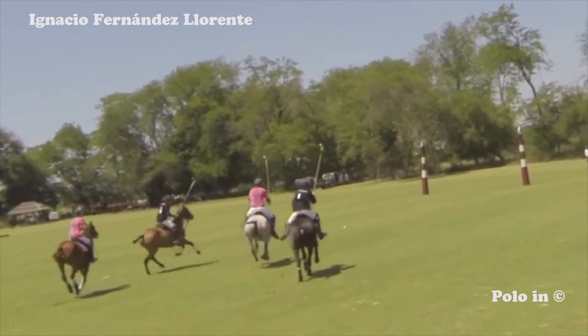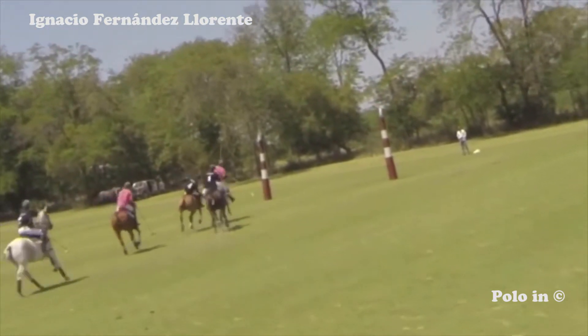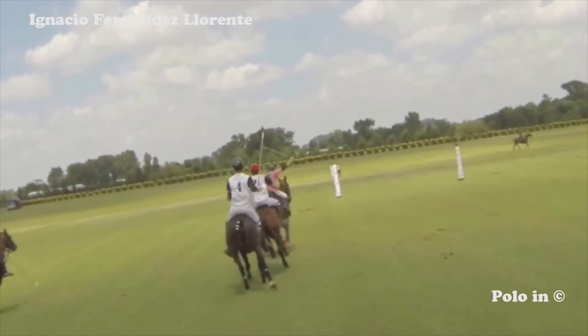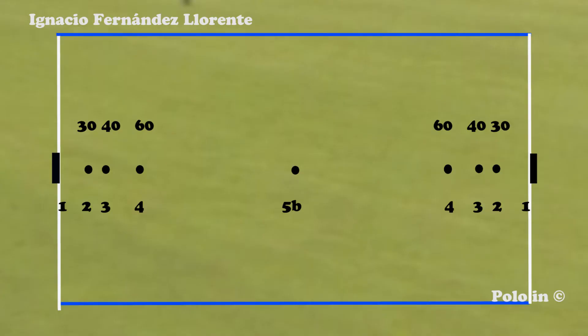Let's see two other examples of Penalty 1. We see in this chart of the field the places where the penalties are. 30 yards from the goal is Penalty 2. 40 yards from the goal is Penalty 3. 60 yards is Penalty 4. Any place in the field is 5A, and center of the field is 5B.